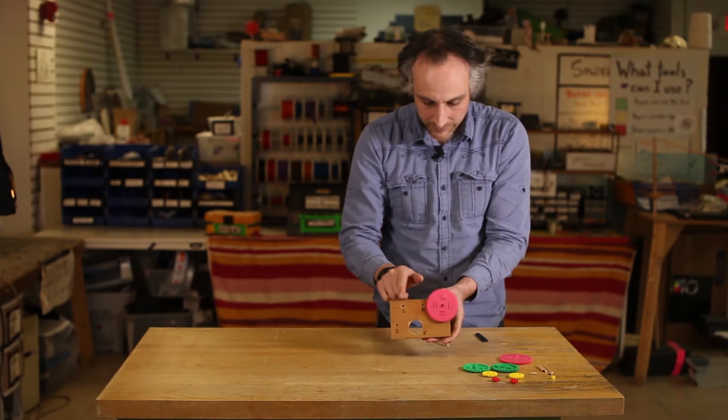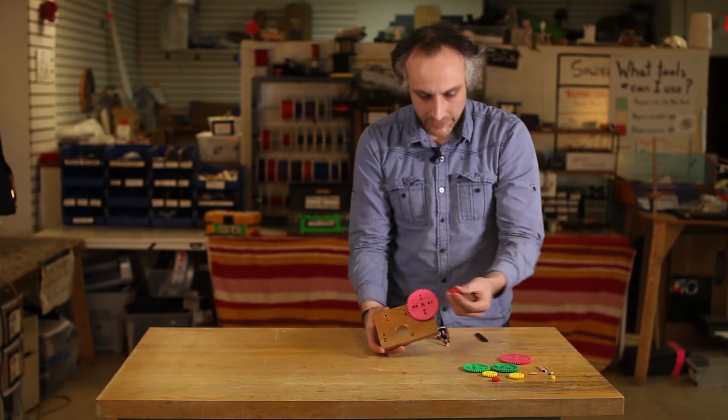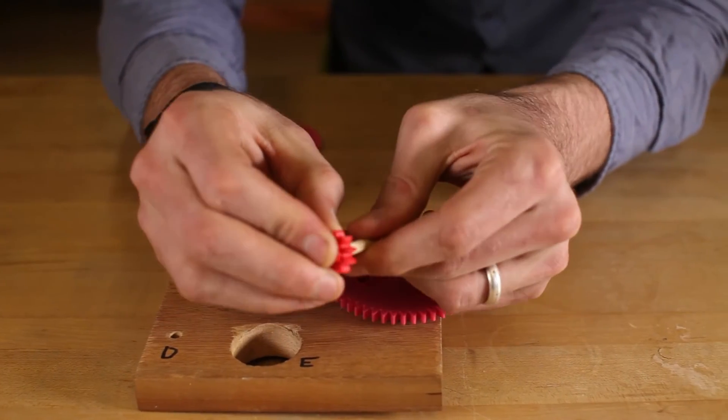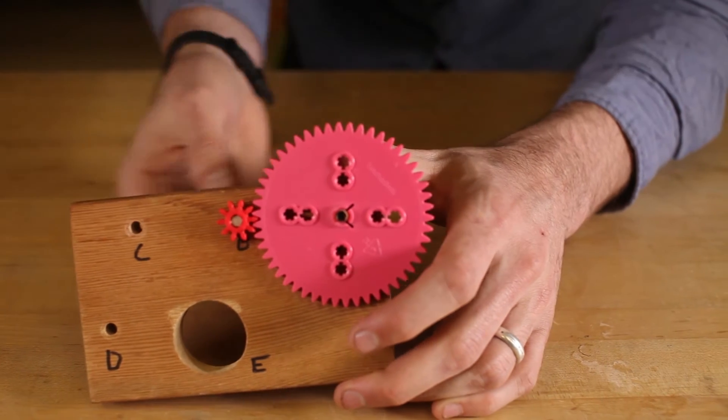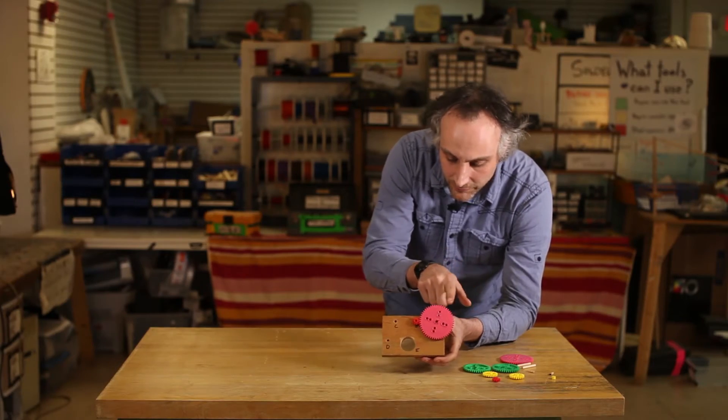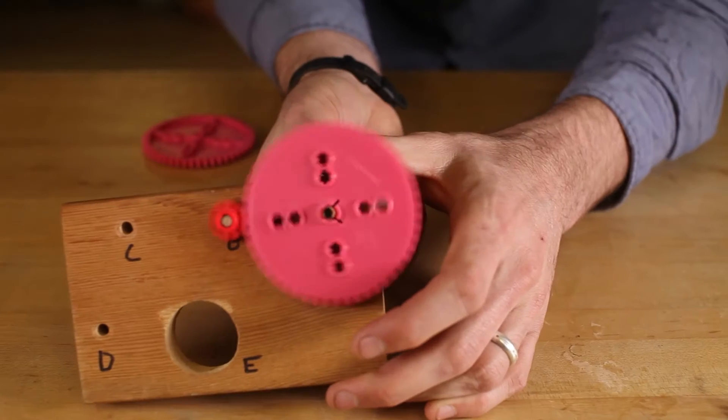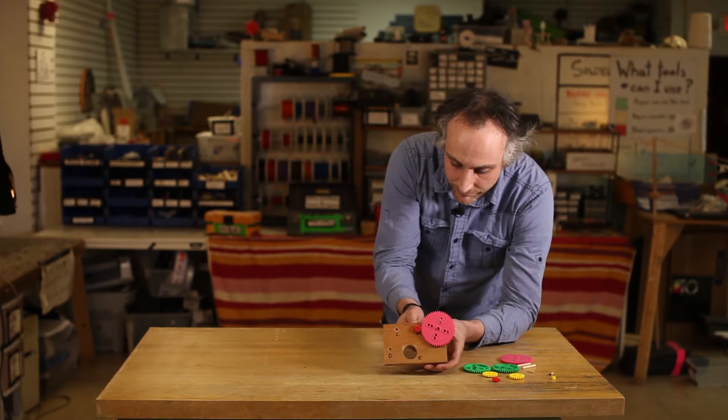And attached to this gear here, I'm going to take one of these 10-tooth gears, these tiny ones. It's going to go on another one of these dowels, stick it through the B hole so it interfaces with this pink gear. And so now this gear is spinning. Every time this goes around, this is going to go around a whole bunch more times. This is 50 teeth and this is 10 teeth, so this will spin five times faster.